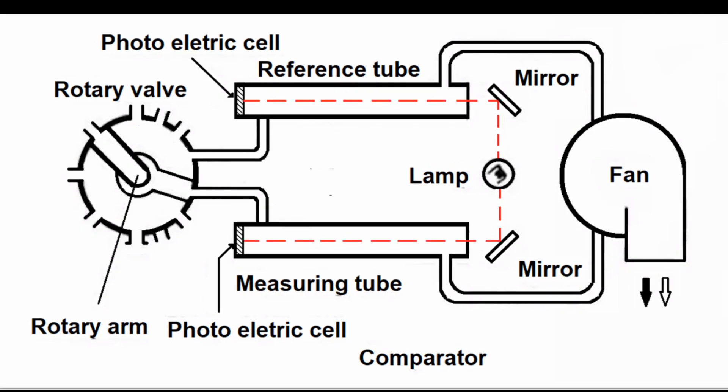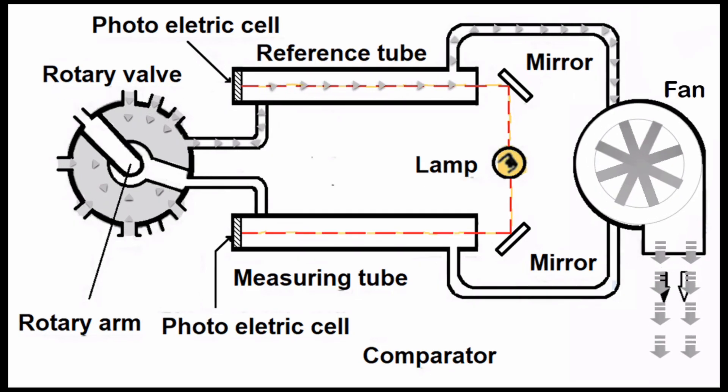Reference tube: This measures the average density of the mist within the crankcase, as there will always be some mechanically generated mist.